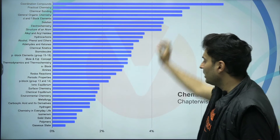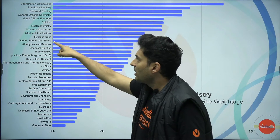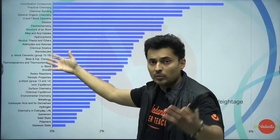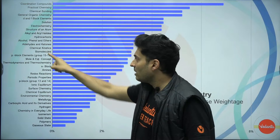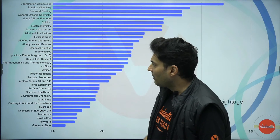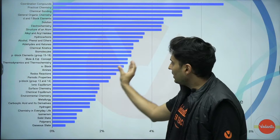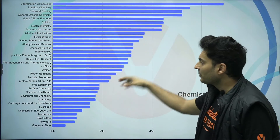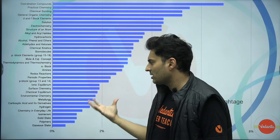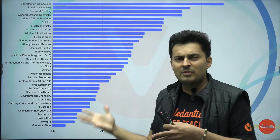The medium weightage range is 2% to 4%. This includes: structure of atom, alkyl and aryl halides, hydrocarbons, alcohols, phenols, ethers, aldehydes, ketones, chemical kinetics, biomolecules, p-block, mole concept, thermodynamics, s-block, amines, redox, periodic properties, and p-block groups 13 and 14. Extremely low weightage topics are: ionic equilibrium, surface chemistry, chemical equilibrium, environmental chemistry, metallurgy, carboxylic acids, hydrogen, chemistry in everyday life, isomerism, polymers, and gaseous state. Note that some topics change over the years.